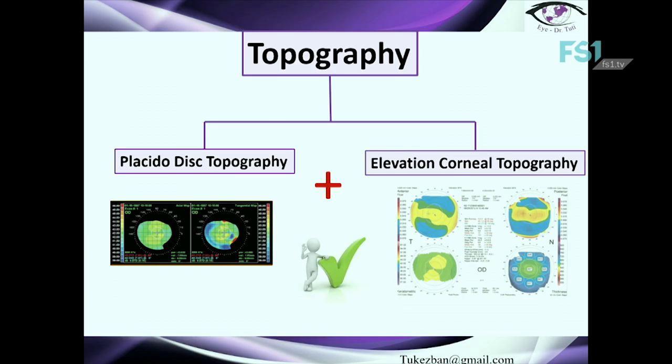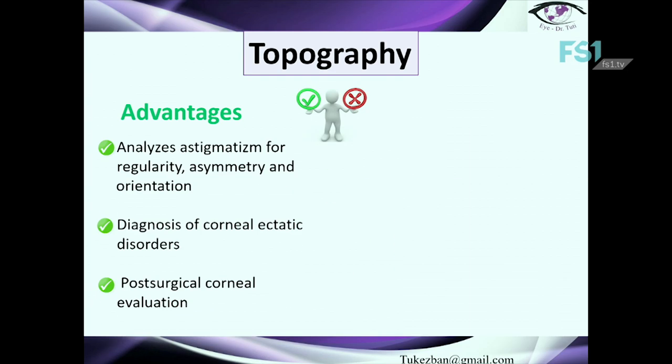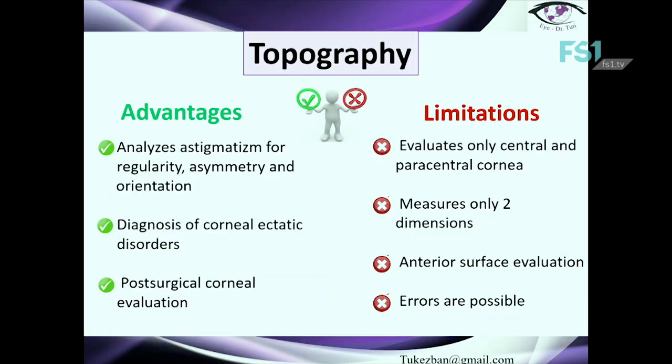Next, topography. When we talk about topography, we mean Placido disc topography and elevation corneal topography. The advantages of this method include: it analyzes astigmatism for regularity, asymmetry, and orientation; it diagnoses corneal ectatic disorders; and it provides sufficient information for pre- and post-surgical corneal estimation. The limitation is that it evaluates only the central and paracentral cornea, measures only two dimensions, provides information mainly from the anterior surface, and errors are possible.